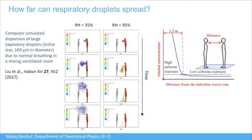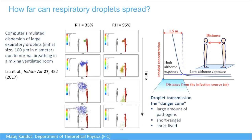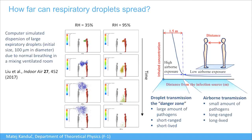Studies identify two infection zones. The first zone, up to ~1.5 meters, is droplet transmission: a large number of droplets and potentially many pathogens, but short-range and short-lived as they quickly fall to the ground. Beyond 1.5 meters is airborne transmission from smaller droplets and aerosols: fewer pathogens but very long-range and long-lived.